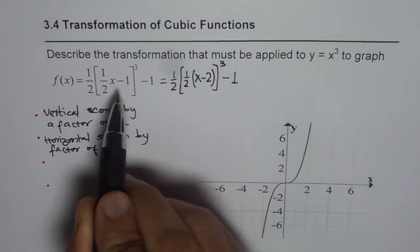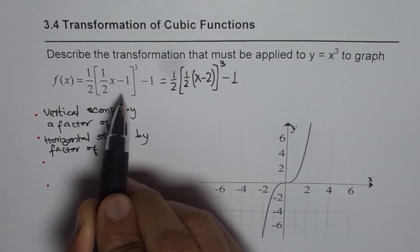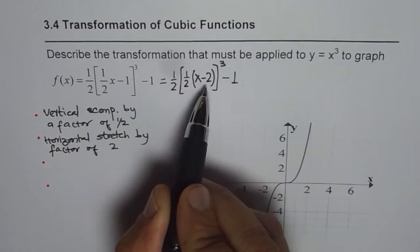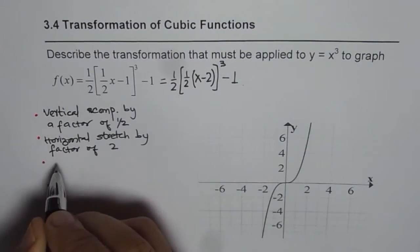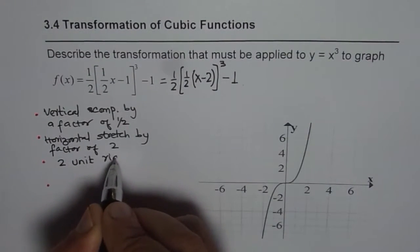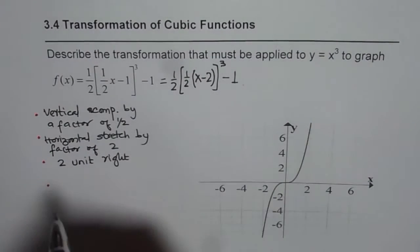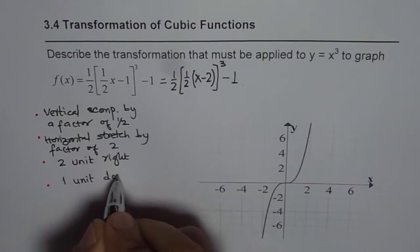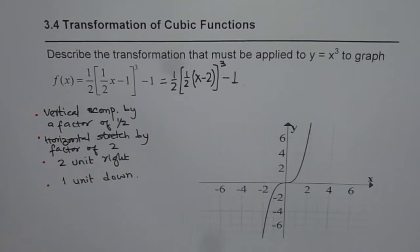Then we get back to this. This is wrong, I mean it is not wrong but you read it wrong from here. Horizontally translate 2 units right. So I will just write 2 units right and 1 unit down, 1 unit down. So that is the transformation.